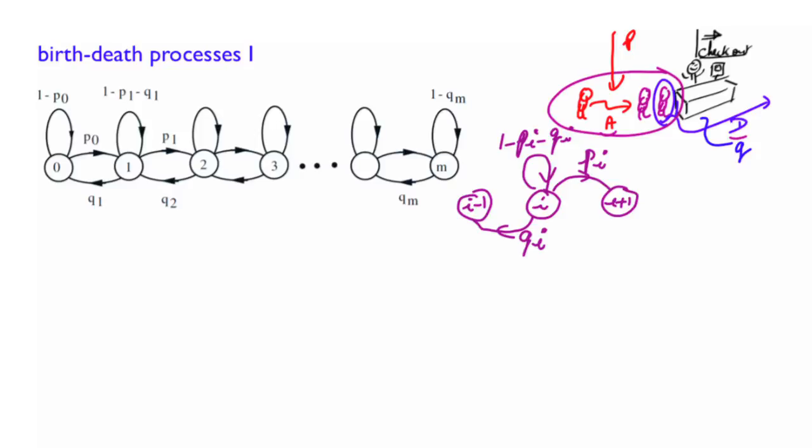Now, in this supermarket example, the p's and the q's were all taken to be the same across the states. But we can generalize. For example, the departure rate, q, could be different from state to state. For example, with lots of customers in the queue, perhaps the clerk will work faster.